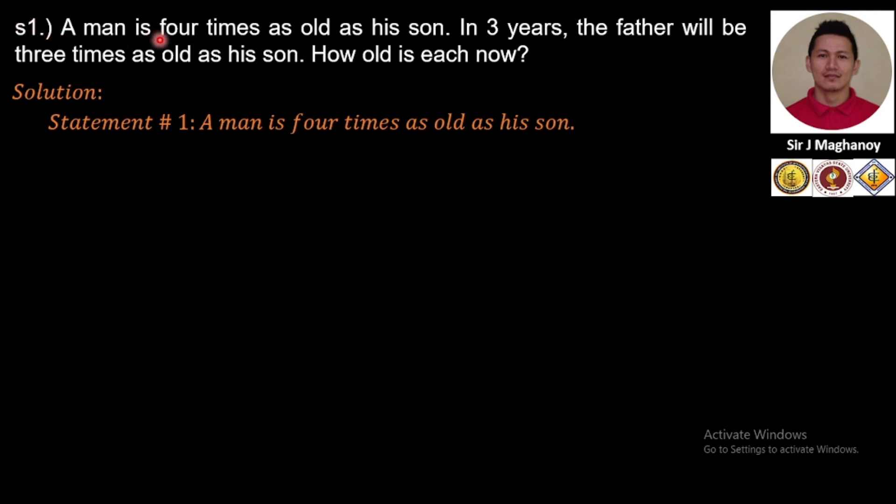A man is four times as old as his son, so we'll establish our variables. Let S be the son's age and 4S be the father's age. It's clear in the statement that the man is four times as old as his son, so we assign 4S for the father's age and S for the son.